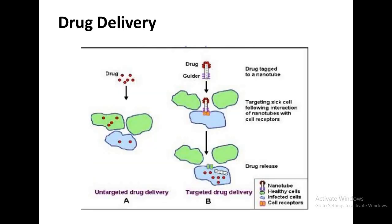With nanomachines, the drug is applied more concentrated directly on the spot of disease instead of a diluted version over a wider area. This increases effectiveness and limits the amount of collateral damage to the surrounding cells.